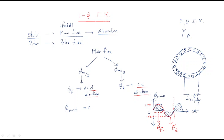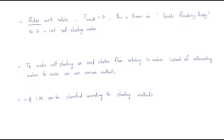Over the positive and negative half cycles, both forward and backward flux components are equal and opposite, so they are added and the resultant flux becomes zero. When single phase supply is given to the stator of a single phase induction motor, the resultant flux becomes zero.